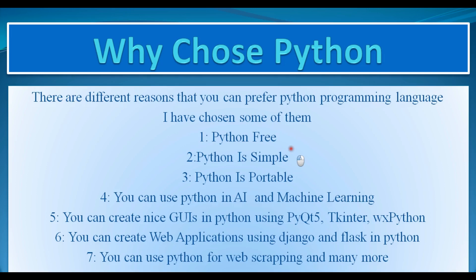For example, the first reason is Python is free, and the second one is Python is simple. If you are not a programmer and you want to start programming and learn your first programming language, Python is the best language for starting. Also, Python is portable. The fourth reason is you can use Python in AI, artificial intelligence and machine learning.